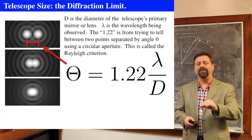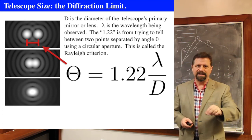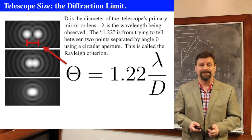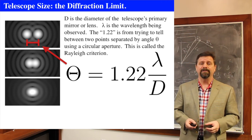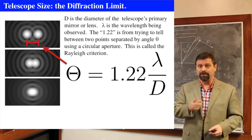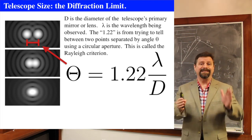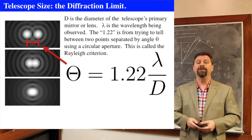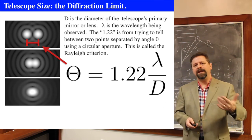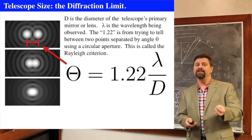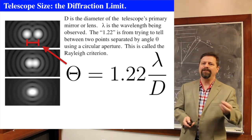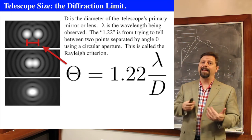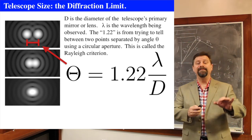We call this the Rayleigh criterion. The angular separation theta equals 1.22 times the wavelength of light divided by the diameter of the telescope, assuming a circular aperture. The 1.22 comes from the circular aperture producing rings; a flat slit would give a different number. Short wavelengths mean smaller angles, and a bigger diameter also gives a smaller angle. So to reach your diffraction limit, use short wavelengths and a large-diameter telescope.